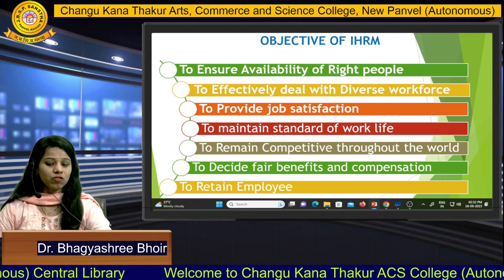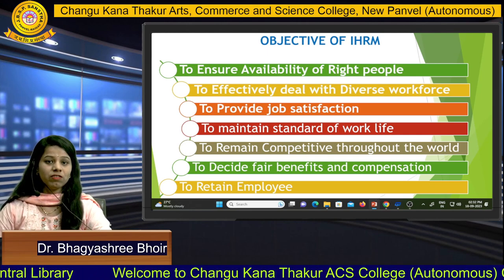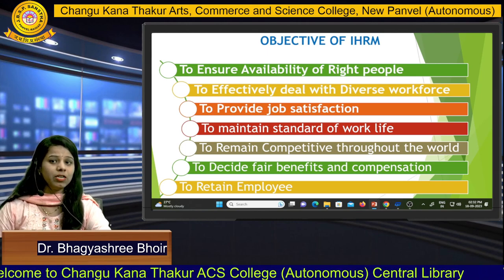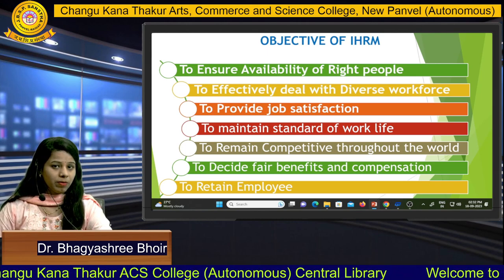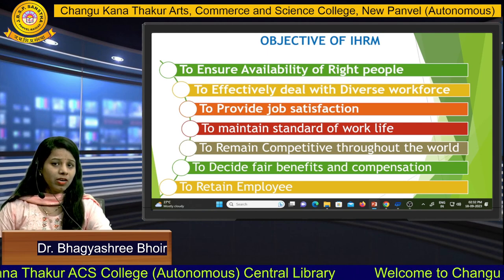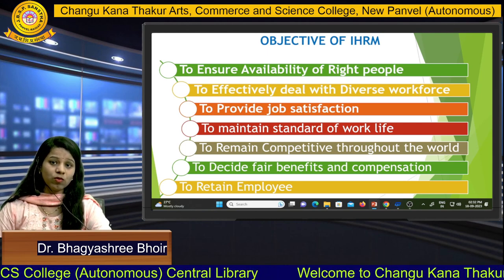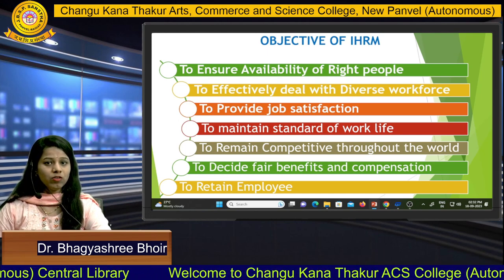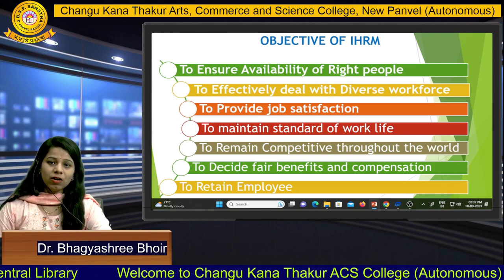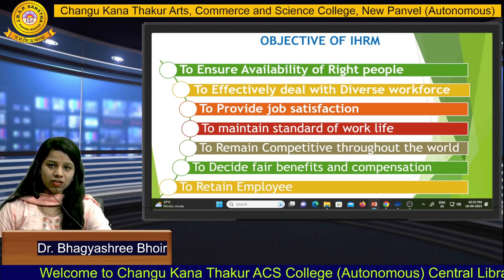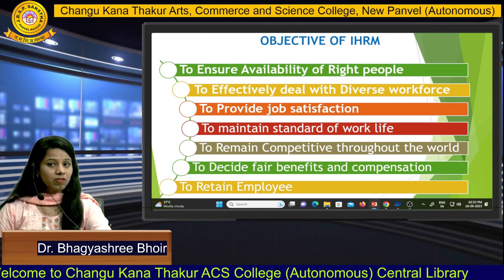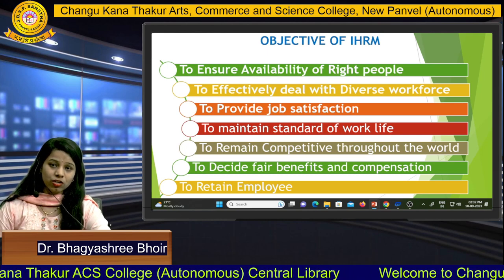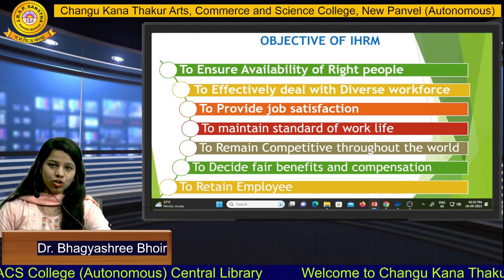Today we learn the objectives of human resource management. The first objective is to ensure availability of right people. It is most important that the right people should be available at the right time for the right company. Whatever people we are recruiting, we have to go through all the recruitment and selection procedures, recruiting the right people for the right positions at the international level.